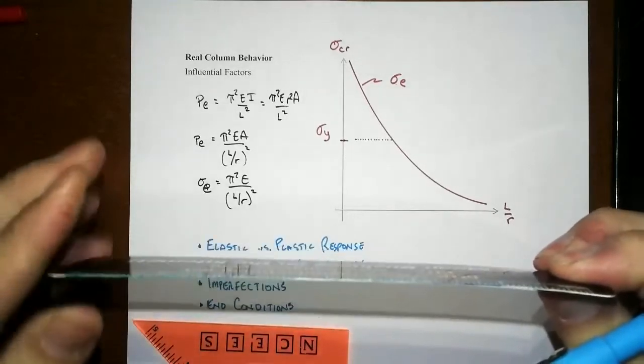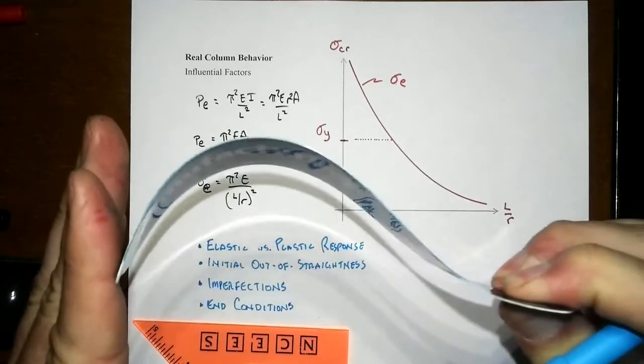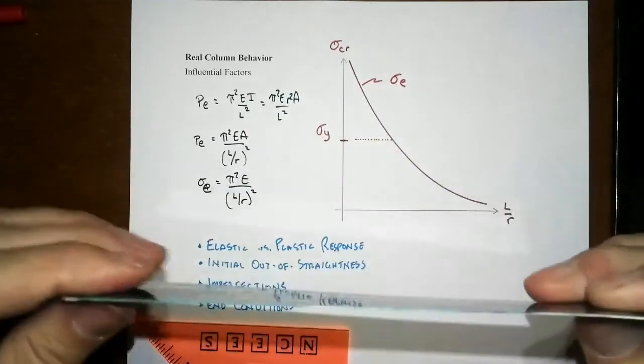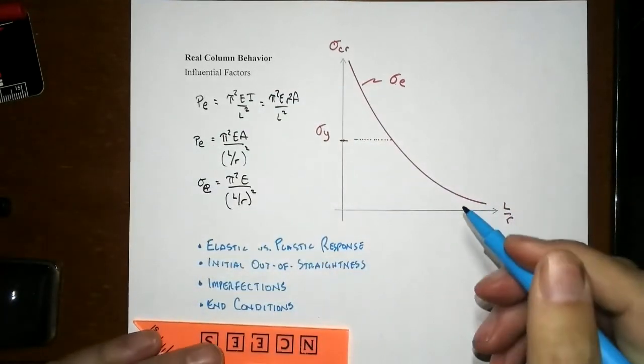The more we clamp down on one end compared to the other changes things. If I pin on one end but clamp on the other, that changes that buckled shape a lot. Get yourself a ruler like this. You can feel that big difference in the buckling force quite a lot.